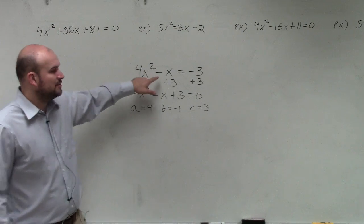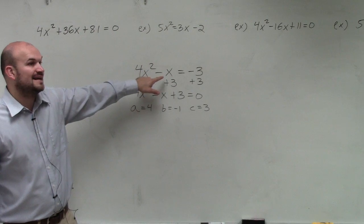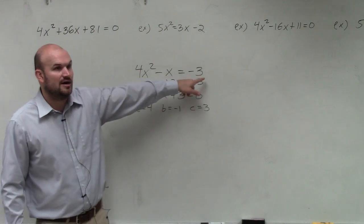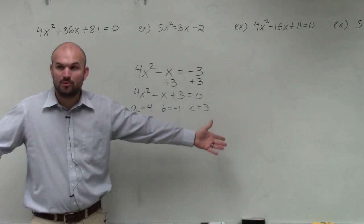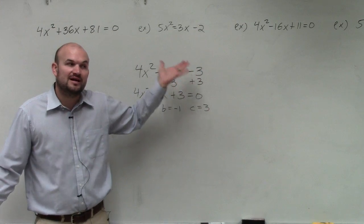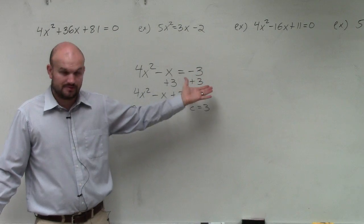But do you notice, if I would have labeled A, B, and C without it set equal to 0, do you see how you would have made a mistake? You would have had -3 instead of +3, and then you would have got the whole problem wrong. So always set your quadratic equal to 0. Always.